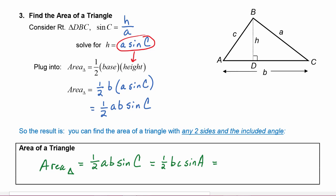Or we could do one half ac sine B, because if we have sides a and c then B is the included angle.